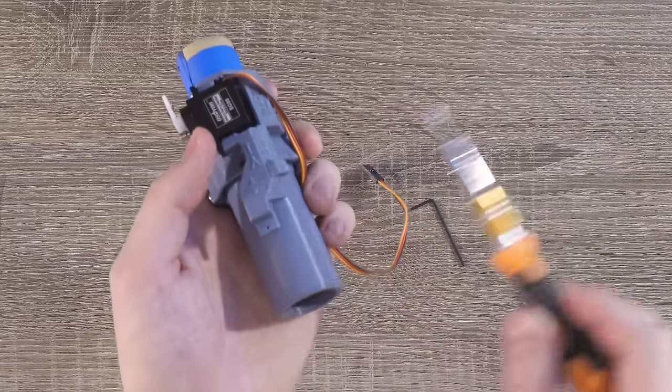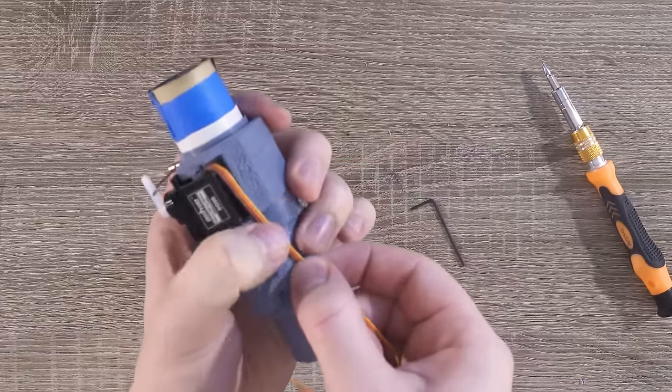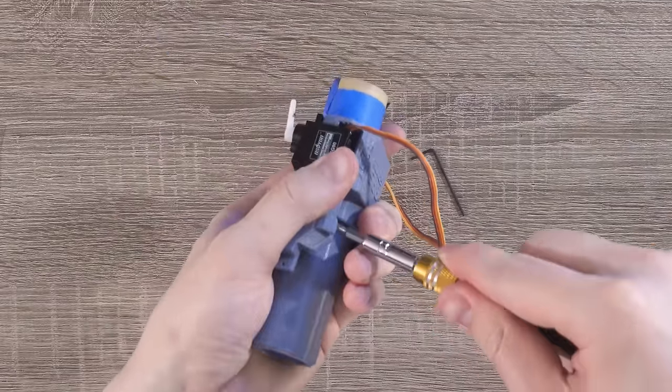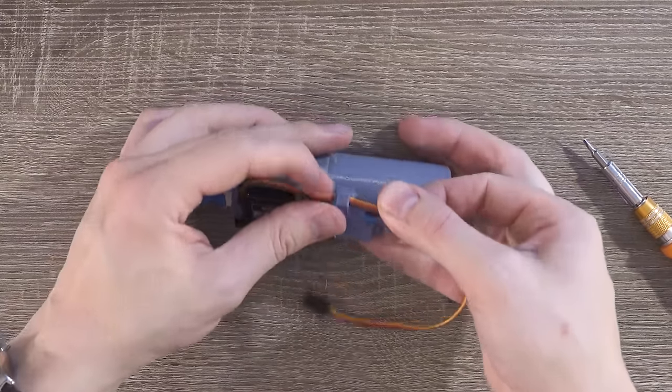Right here on the inner gimbal, there's a little clamp to hold the Y-axis servo cable. You may need to pry the clamp open with the screwdriver a little bit, but once the cable is in there, it'll help prevent jams in the thrust vectoring mount.